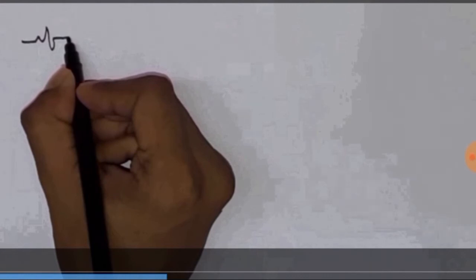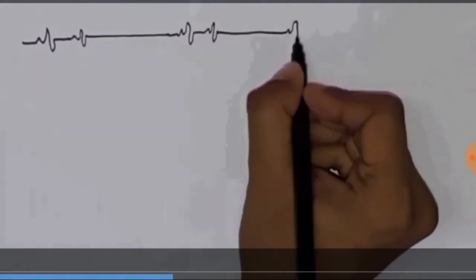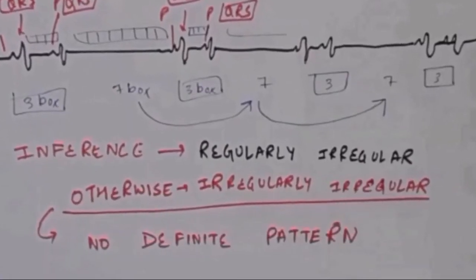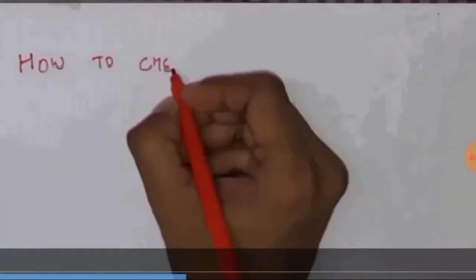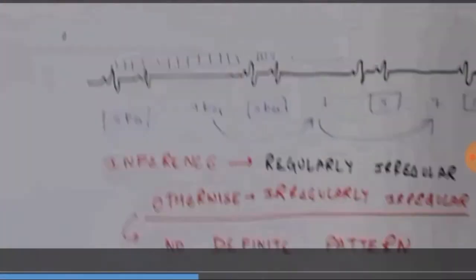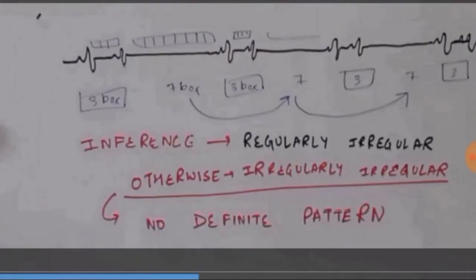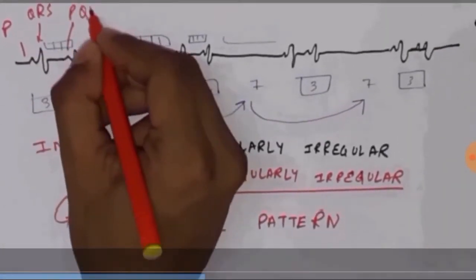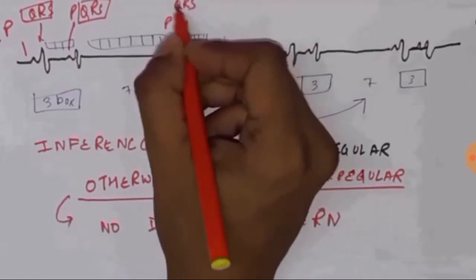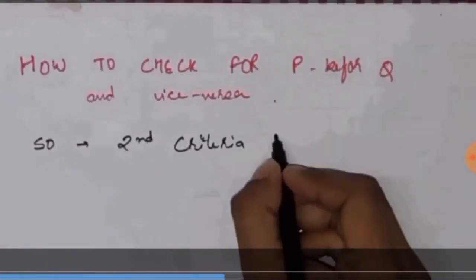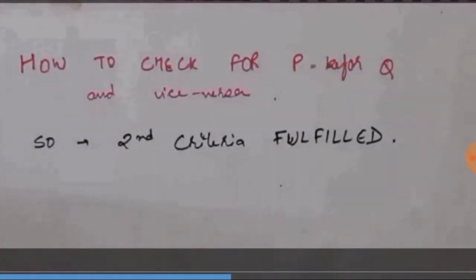We are going to take an ECG, a rough sketch, and we are going to see here how to check for P before Q and Q before QRS. It's a simple thing. You just have to see that every P wave is prior to the QRS, and every QRS is followed by a P wave. So, our second criteria is fulfilled.